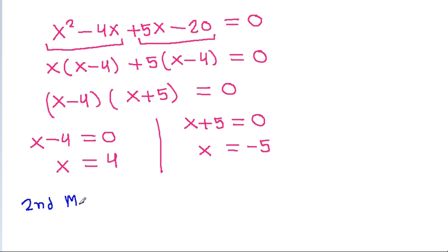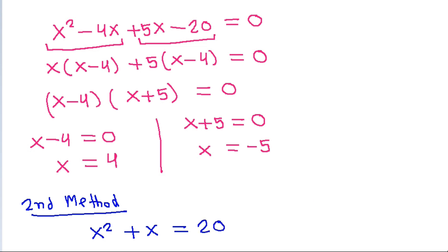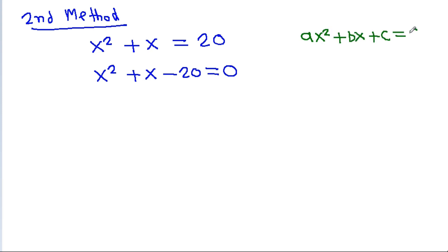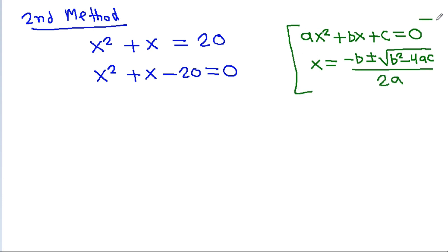For the second method, we have x squared plus x is equal to 20, and it is x squared plus x minus 20 is equal to 0. For ax squared plus bx plus c is equal to 0, x is equal to minus b plus or minus square root of b squared minus 4ac, all over 2a. Here a is 1, b is 1, c is minus 20.